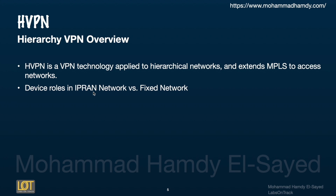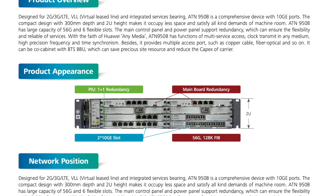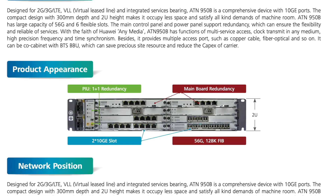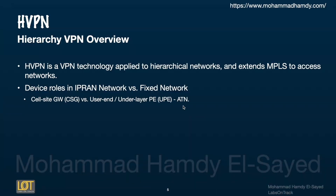As explained, we have the aggregation ring and access ring, and in each ring there are roles for each router device. We have the Cell-Side Gateway or CSG — also called UPE (User-end PE) in fixed network terms. This type of device can be a Huawei ATN device. The CSG is the ATN node, a router located on the access ring to connect the access service nodes.